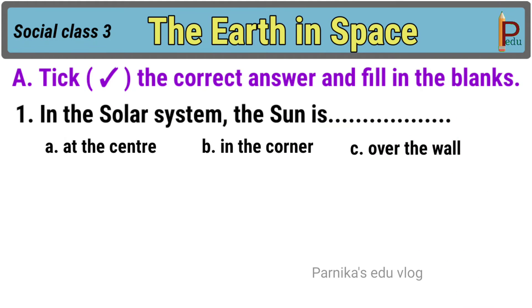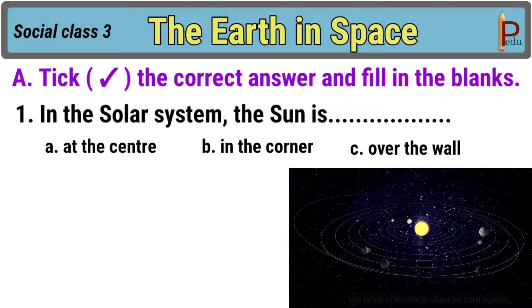First one, in the solar system, the sun is dash. Look at here, the sun is at the center of this solar system. So the answer is A, at the center.